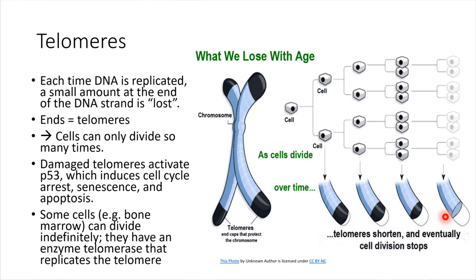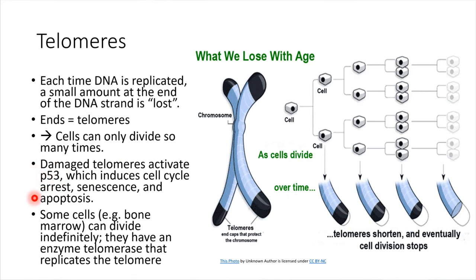Eventually this is going to start causing problems, and this is thought to be one of the things that contributes to aging — just the fact that our chromosomes get shorter with successive rounds of cell division. Eventually this is going to start chopping off portions of important genes. There's essentially a limit to how many times cells can divide without experiencing some sort of damage. Damaged telomeres tend to activate a number of different things, including the gene p53, which then causes apoptosis, or programmed cell death.